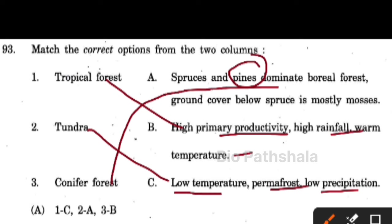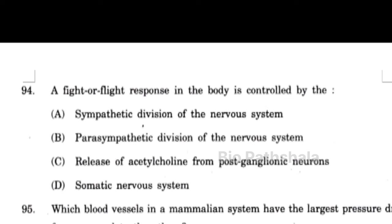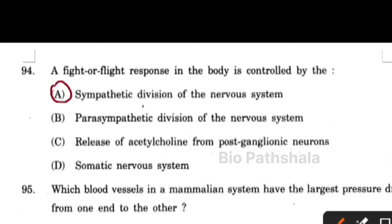So the correct combination is option number C. Next question: fight or flight response in the body is controlled by option number A — the sympathetic division of the nervous system.